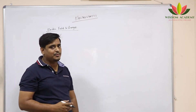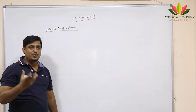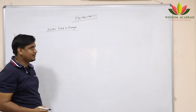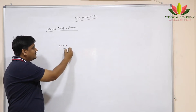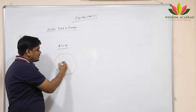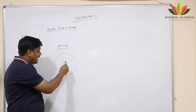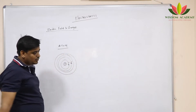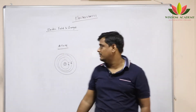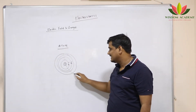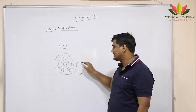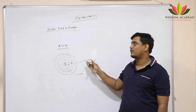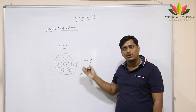When I say charge, where does the charge come from? Charge comes from the atom. If you remember, you would have learned about the atom in your junior classes — what is an atom and what is the structure of an atom. The atom consists of a nucleus where there is a positive charge, and around the nucleus we have shells where we have electrons. Protons carry positive charge and electrons carry negative charge.